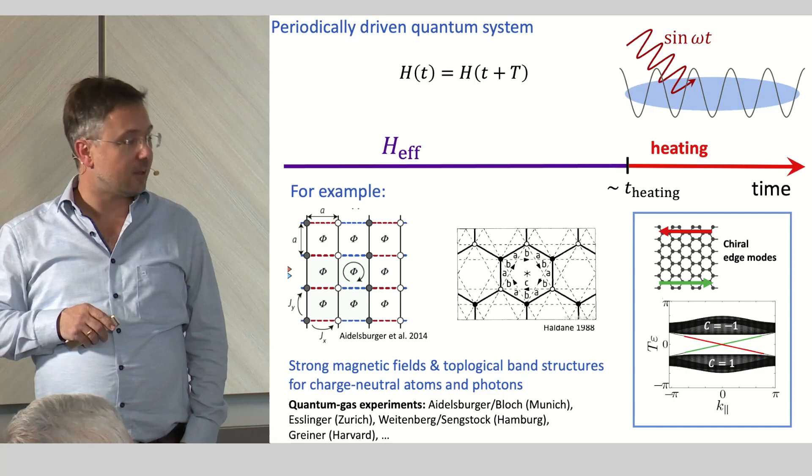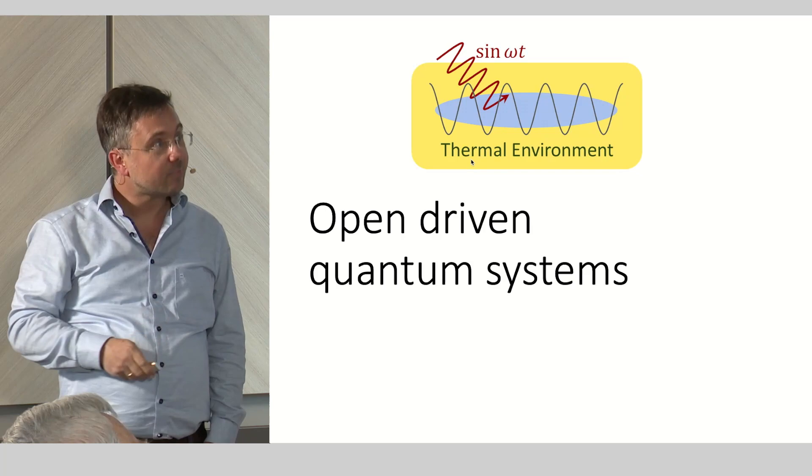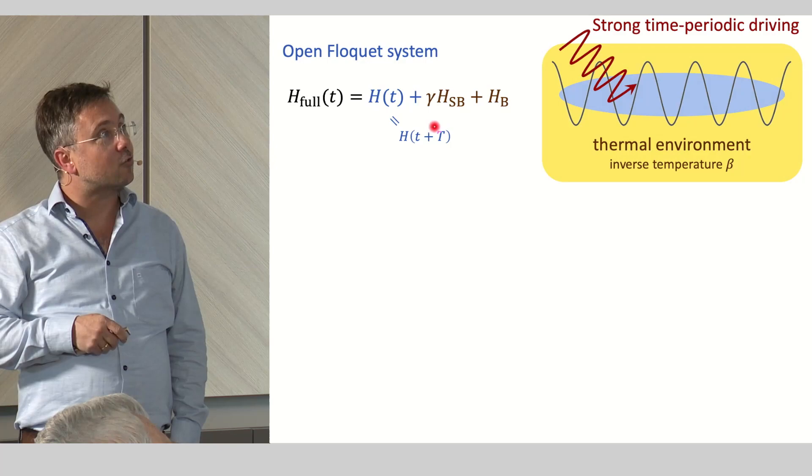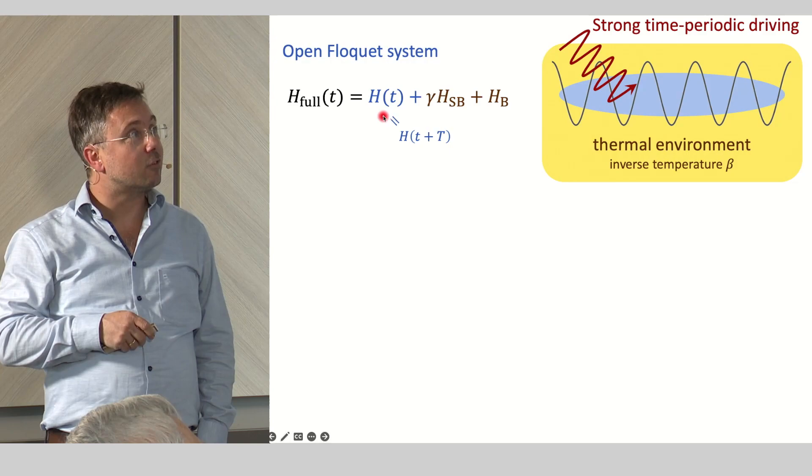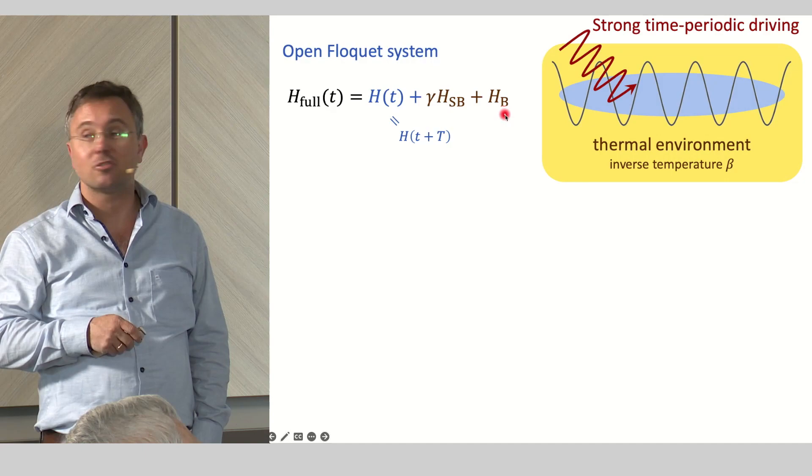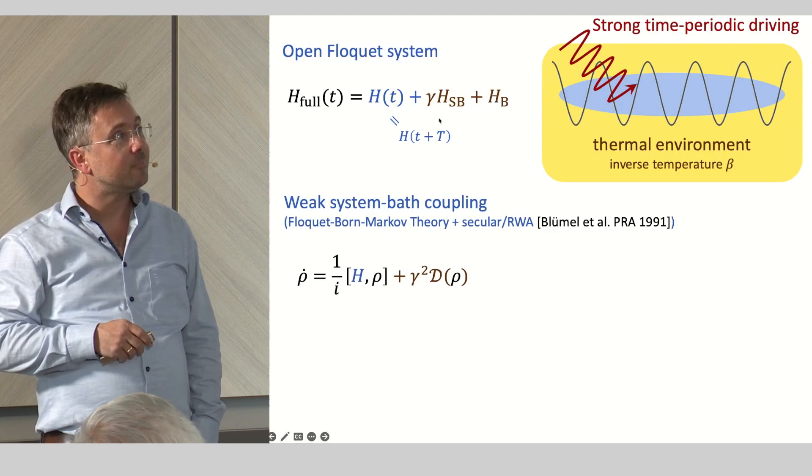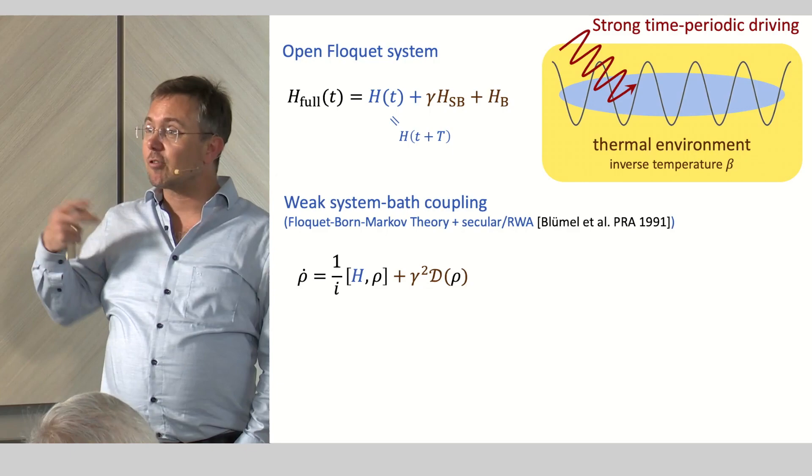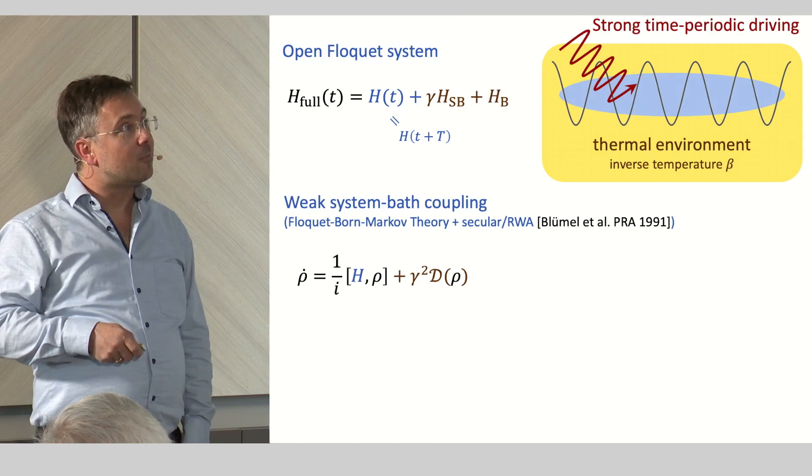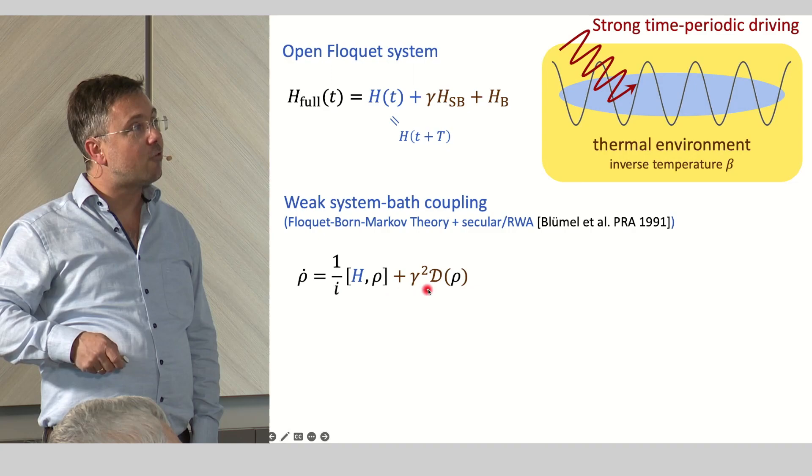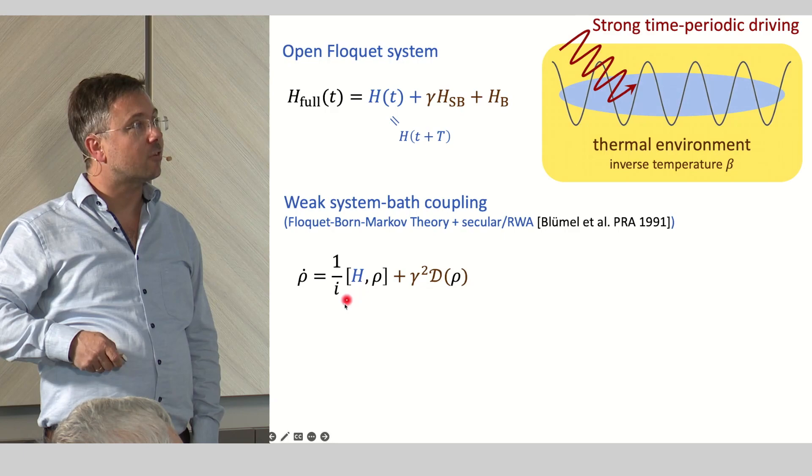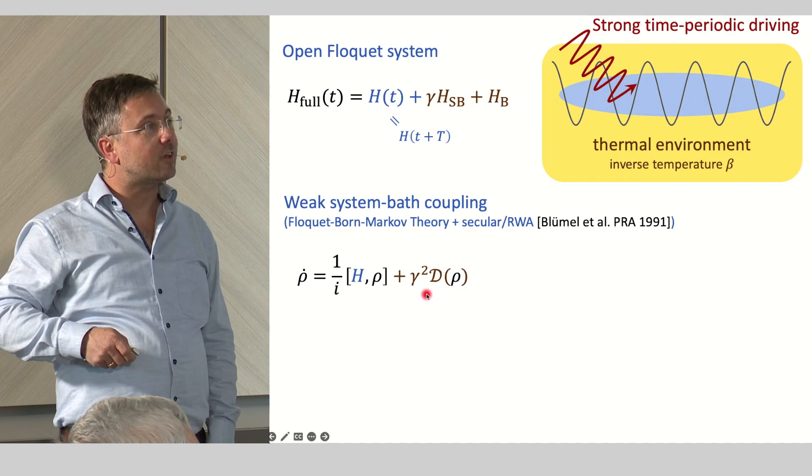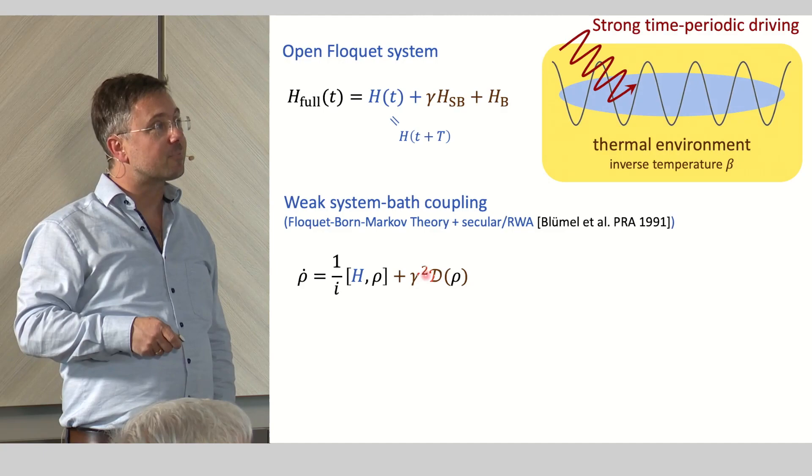Let us now have a look at these open driven quantum systems. They are described by time-periodic Hamiltonian describing the system which is driven, which is coupled to some bath. We will assume some collection of harmonic oscillators where you have a coupling between system and bath. In the limit of weak system-bath coupling, you can generalize Born-Markov theory to the case of Floquet systems, and you can derive a master equation which has this typical form. You have a coherent part describing the coherent evolution with the Hamiltonian of the system, maybe also some lamb shift.